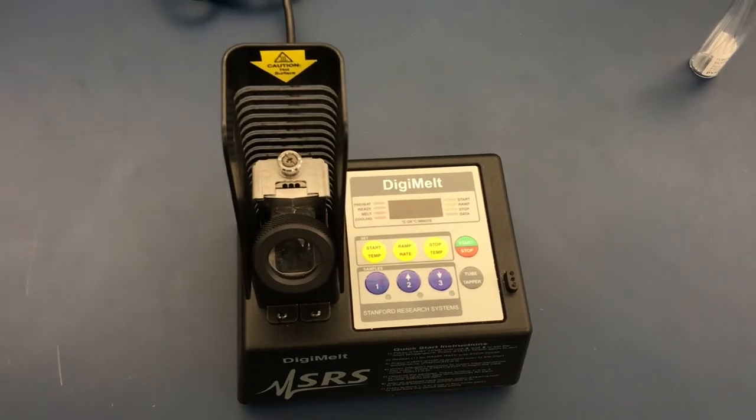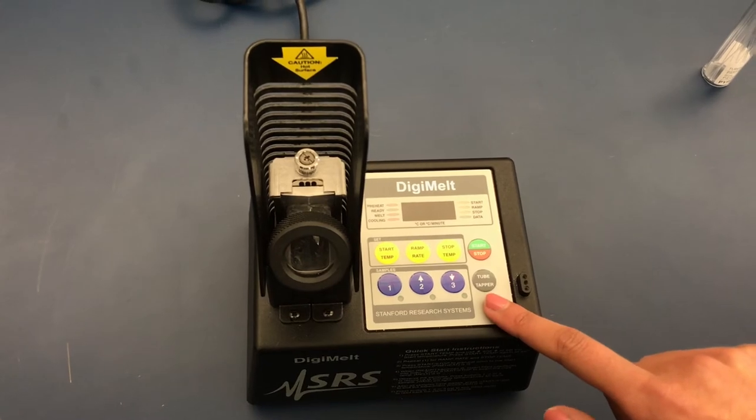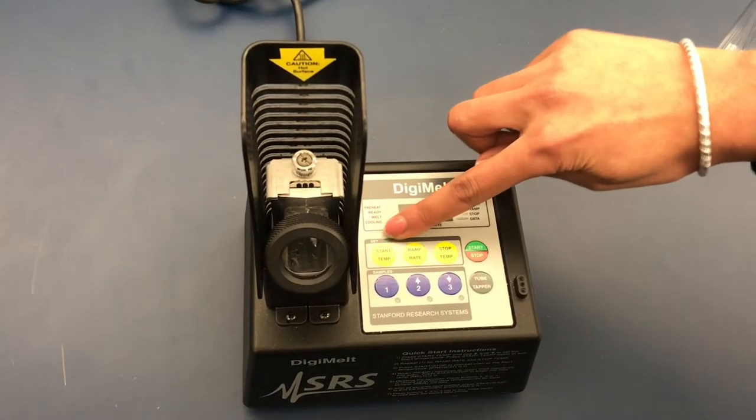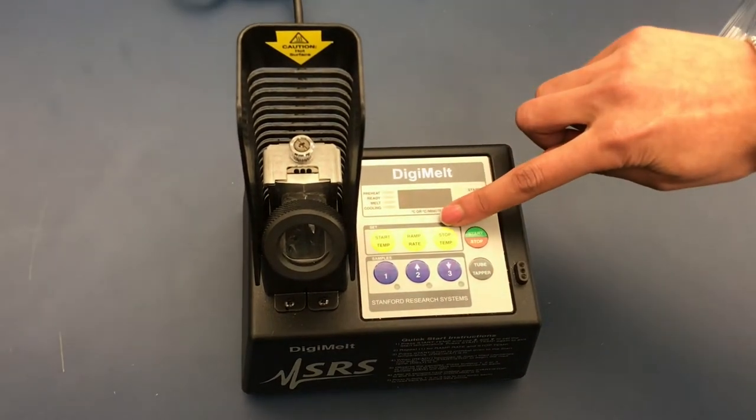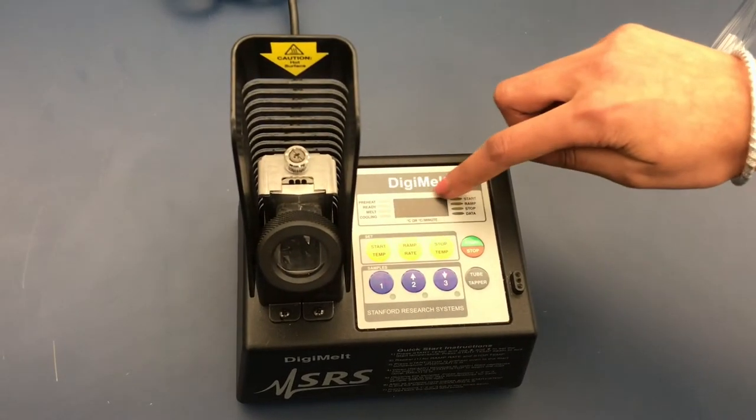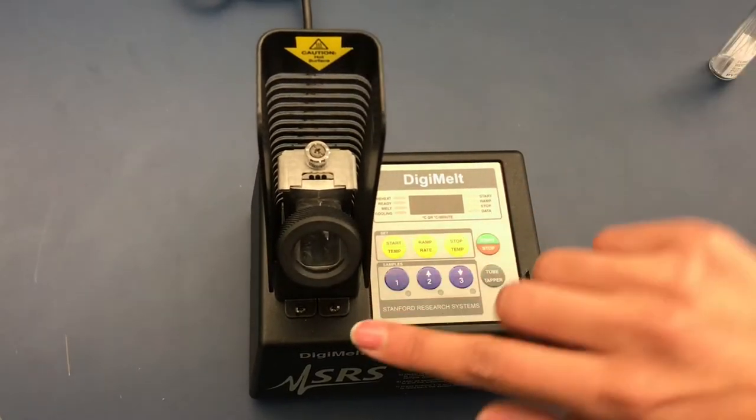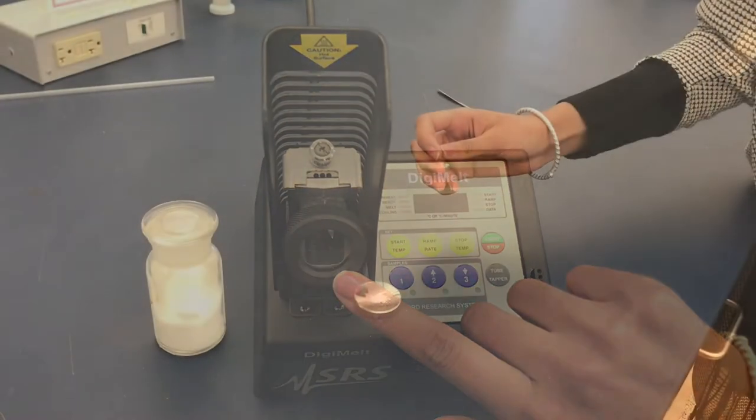The DigiMelt has many parts: the tube tapper with the tube tapper button, the start temperature button, the ramp rate button, the stop temperature button, the start/stop button, indicators for the state of DigiMelt, temperature display, and a place to actually melt the solid which you can look at through a magnifying glass.